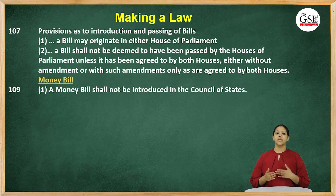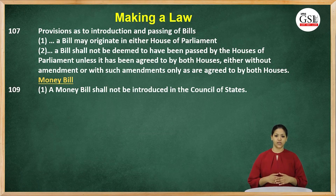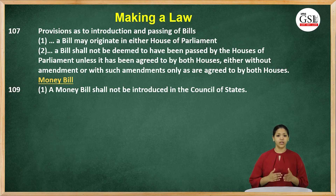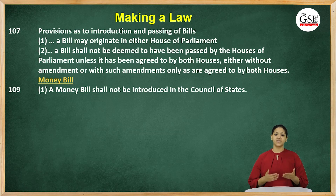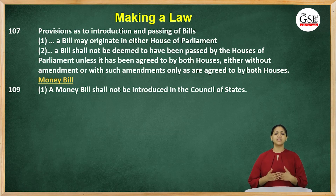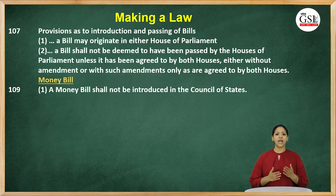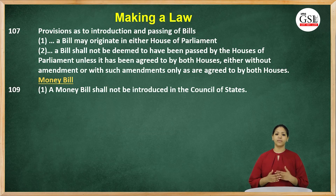If the bill passes, it will be sent to the other house for debate and scrutiny. The other house may amend the bill, and if so, the amended bill will need to be passed by the first house again. After both houses pass the same bill, it is sent to the president for his assent. The president may give his assent and the bill will become a law. The procedure for money bills is slightly different — no money bill shall be introduced in the Parliament without the recommendation of the president.